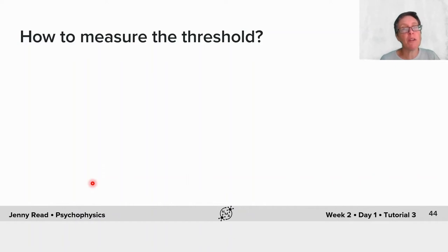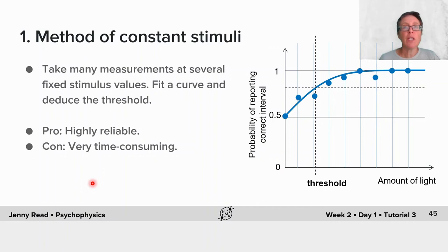How can you measure this threshold once you've chosen how to define it? One classic approach is the method of constant stimuli. The idea here is that you choose a set of fixed values, a set of stimulus intensities, and you do many repetitions with each of those.